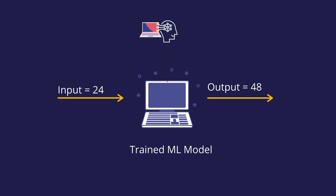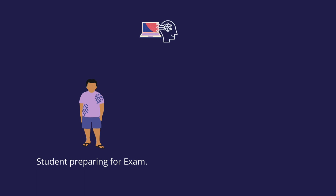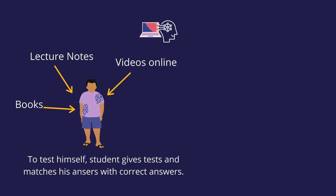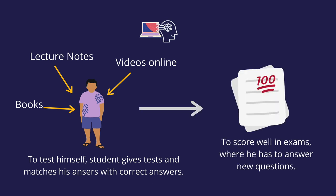This is just a basic example of how a computer learns. It is quite similar to a student learning for exams, where the data sources are textbooks, college lecture notes, online videos, etc. The student also gives mock tests to verify their learning — matching input with an output. Finally, with knowledge built from lots of data and testing, they can go into the exam and answer all the new questions correctly.